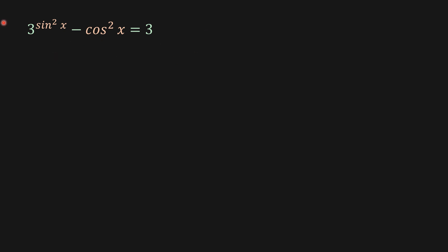Hello guys, welcome to the channel. Today we're going to be solving this problem here. 3 sine squared x minus cosine squared x is equal to 3.